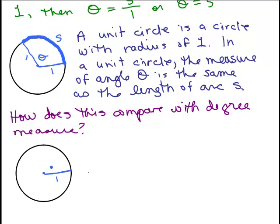What if I drew the angle that went all the way around, a full revolution here? So all the way around, and I call that theta.